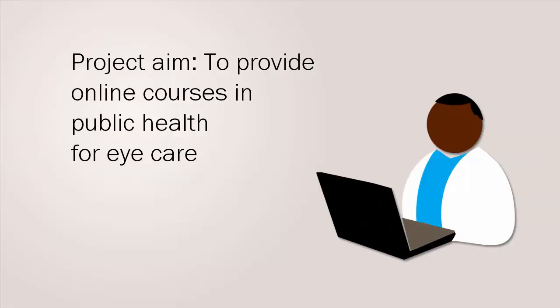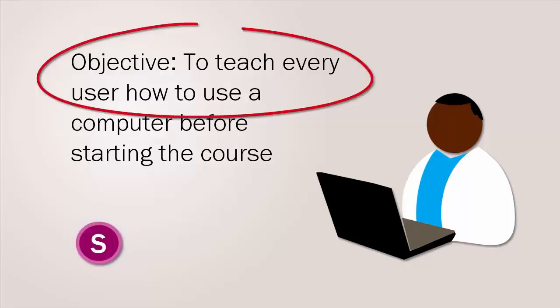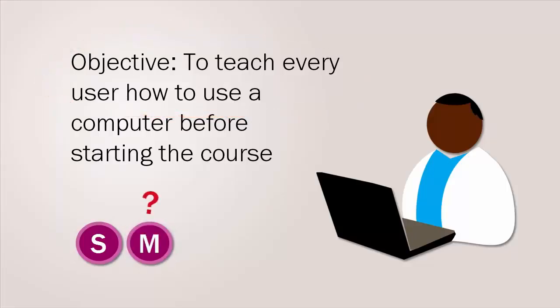Let's look at another example. A project aims to provide online courses in public health for eye care. One objective is to teach every user how to use a computer before they start the course. When we look at this objective, we can see that it is specific in its action to teach computer skills to every user. However, it will be difficult to assess every user's computer skills in an online setting. It is not really achievable as users will be in different locations with different access to computers. And it is not really relevant either, as the aim of the project is not to teach computer skills but public health for eye care.